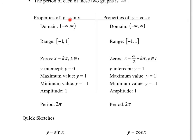The y-intercept of sine — this is one we'll go back to a lot — is y equals 0, so it actually crosses at the origin. And the y-intercept of cosine is y equals 1, which starts at the maximum. So cosine starts at the maximum while sine crosses both the x-axis and the y-axis. Maximum value is 1, minimum value is negative 1 — that's true for both.